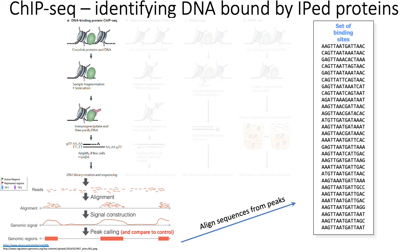Afterwards, you can basically do one of two things. Number one, through the peak calling process, you've identified regions across the genome where your TF is bound. The second thing you can do is try to qualitatively and semi-quantitatively characterize the general DNA binding preferences of your TF by taking all the different peaks across the genome where your TF binds, aligning those peaks to each other into a multiple sequence alignment, to identify what the transcription factor's preferences for different bases are in different positions of its recognition site.